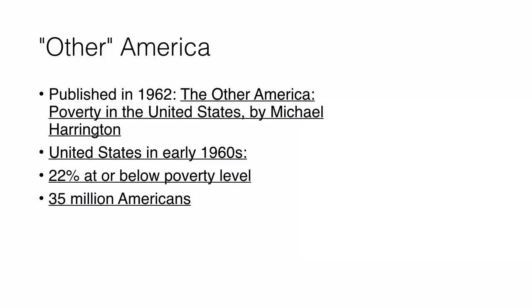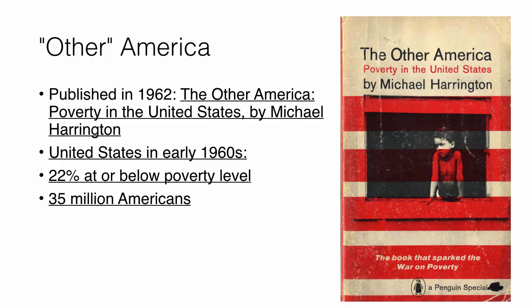The final topic of this lecture is The Other America, a book by Michael Harrington that spoke about poverty in the United States. Even though the United States was seeing a lot of affluence, when this book was published in 1962, Harrington revealed that 22% of Americans were at or below the poverty level — about 35 million Americans. That means not everybody was affluent or had a suburban home.